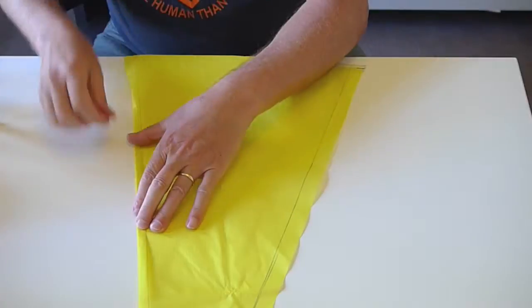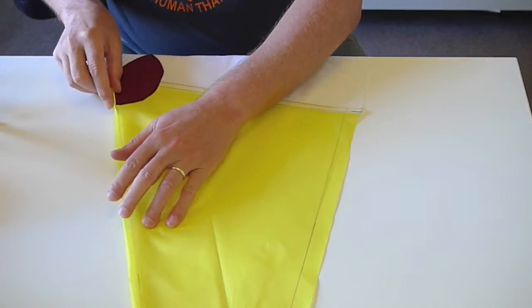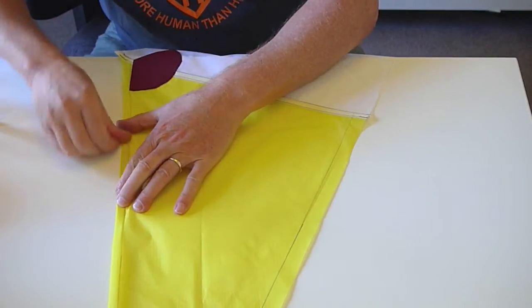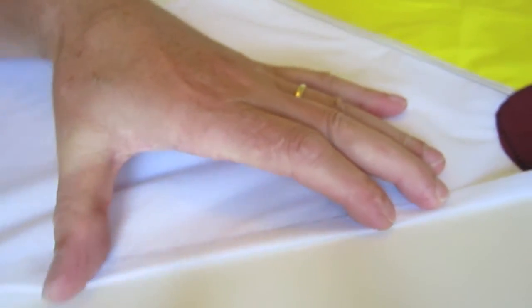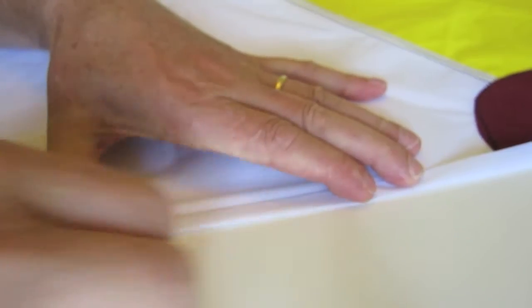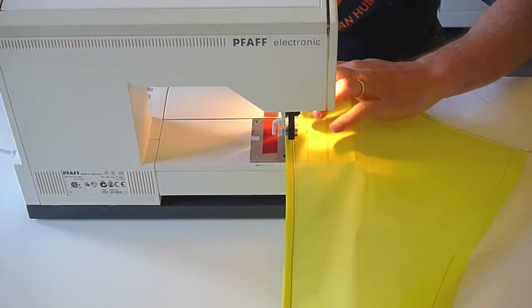Now for the double folded hem that goes all the way around the kite, you fold over one centimeter to that sewing line. It helps if you crease it first before you start sewing. Then that is folded over again and sewn down all the way around with a straight stitch.